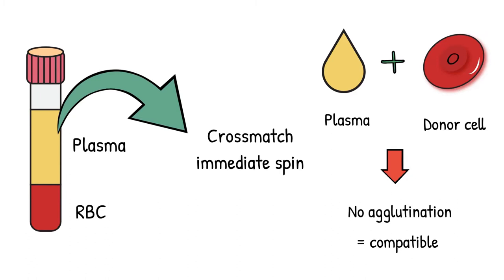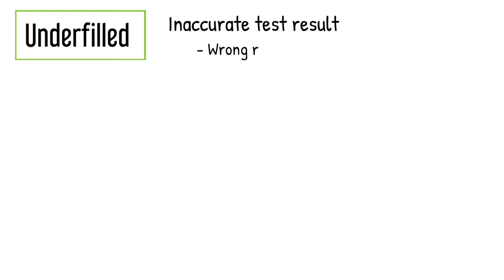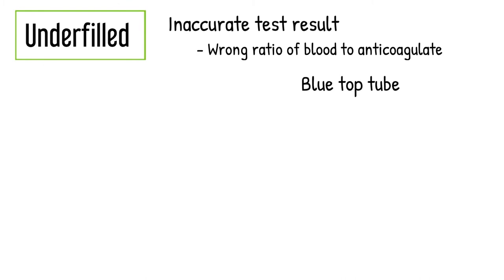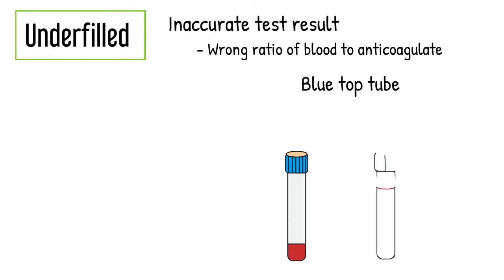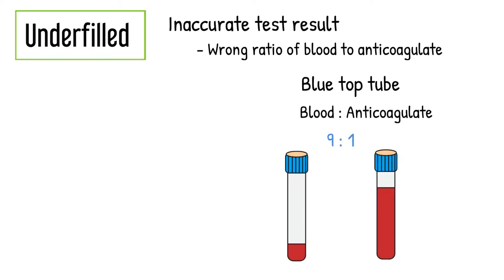Underfill. Some test results are inaccurate when the ratio of blood to anticoagulant in the tube is incorrect. The more problematic tube would be the blue top tube, which is used for coagulation tests. A blue top tube always gets rejected by laboratory personnel if not filled because the test result is altered when the ratio of blood to anticoagulant is not 9 to 1.